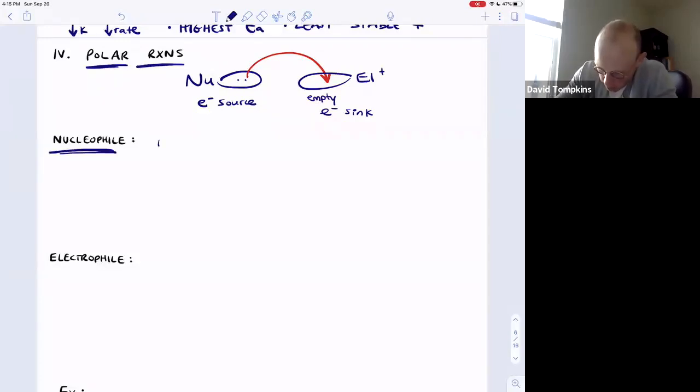Nucleophiles desire a nucleus, they desire positive charge, they are electron rich or they serve as the electron source and they donate electrons towards the sink. Nucleophiles are also known as Lewis bases and you should have been able to define that term: electron pair donor.